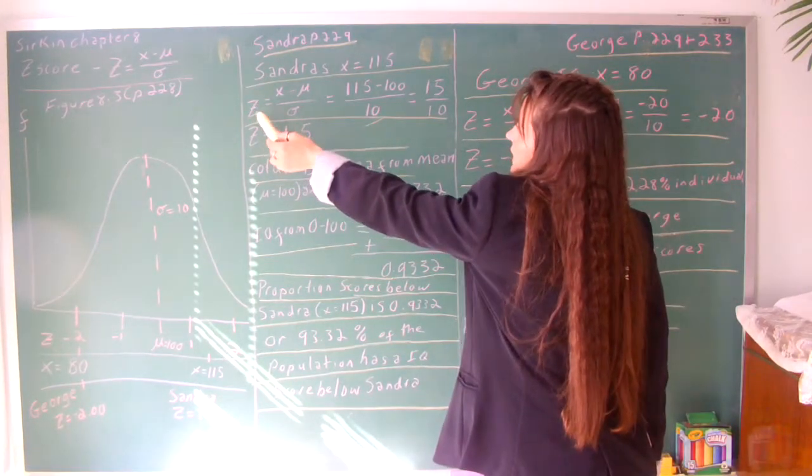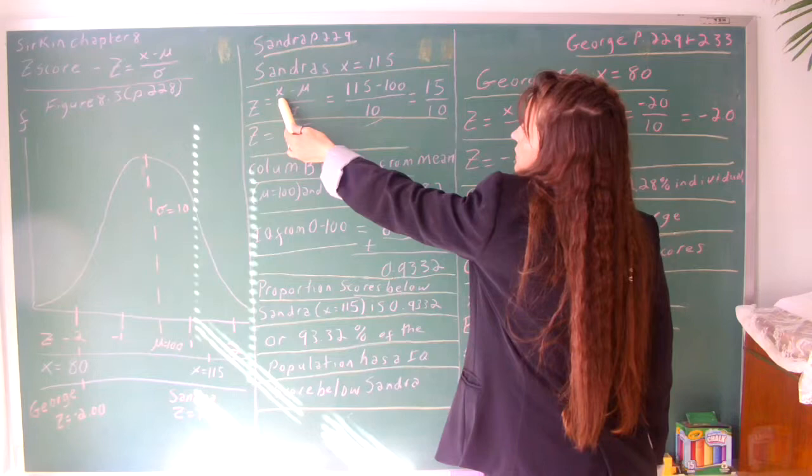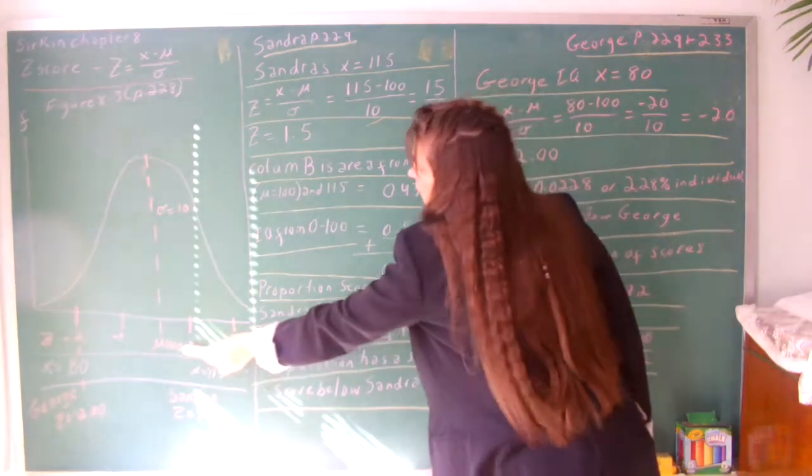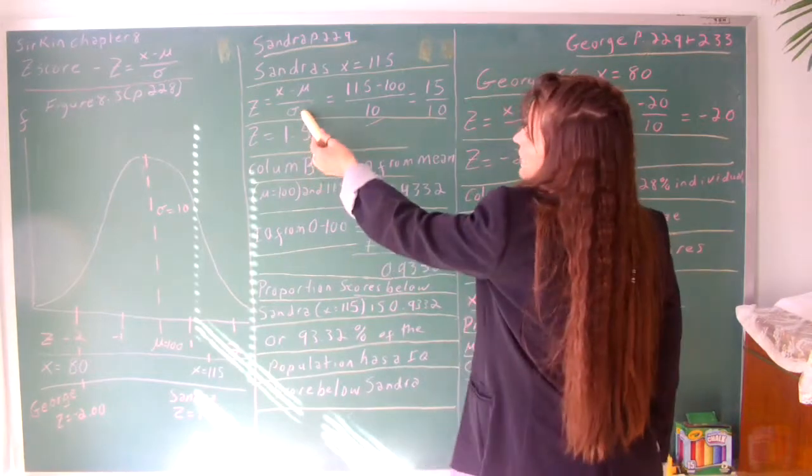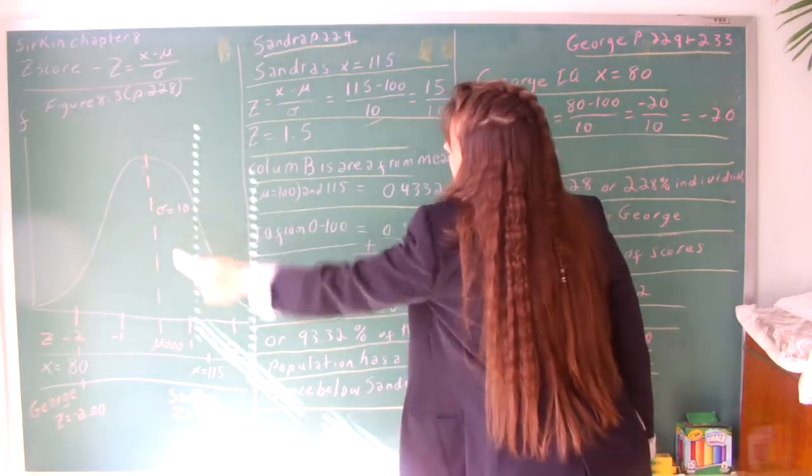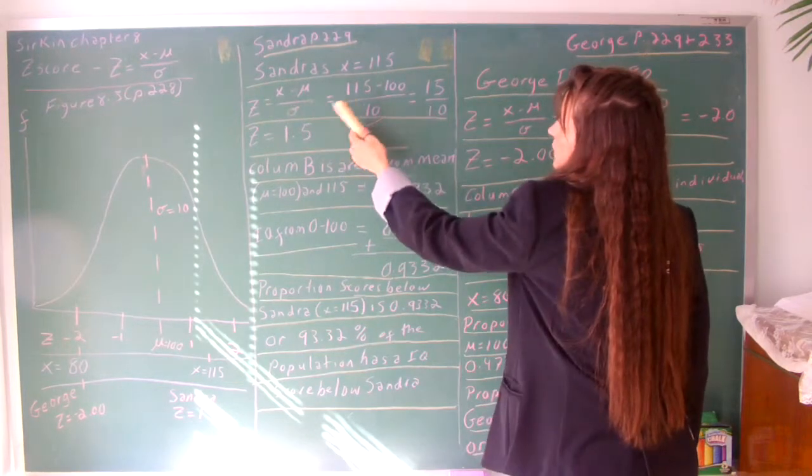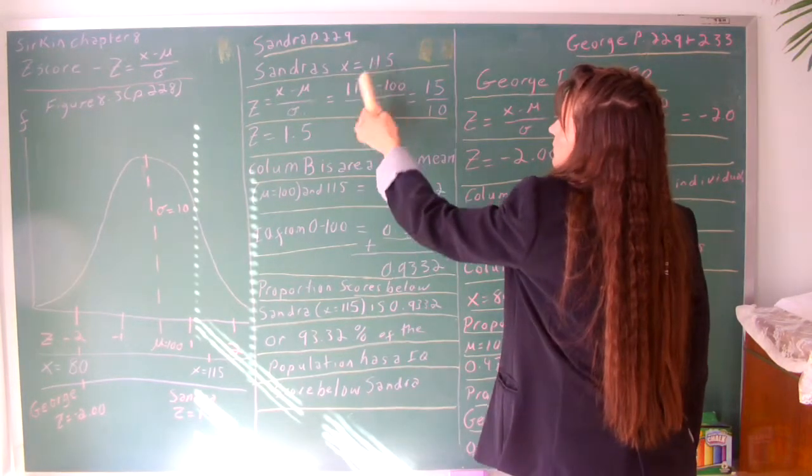So z equals the individual score x minus the population mean mu divided by sigma, the population standard deviation, which is 10. We plug it in after we show the formula. We show and tell the formula.